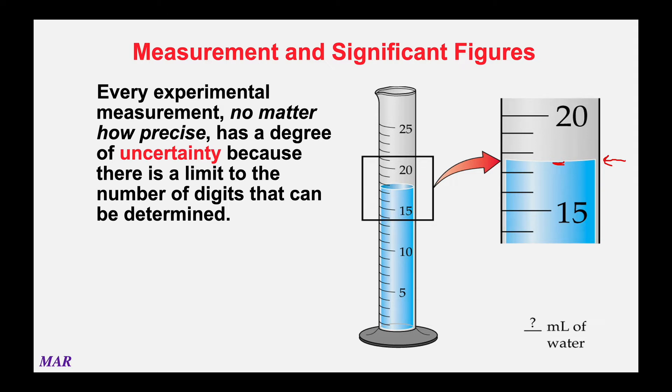If you look on the left side, 15 is the big one, 16, 17, 18, 19, 20. So I think we would all agree that the bottom of that curved meniscus is between 17 and 18.